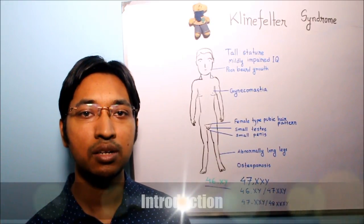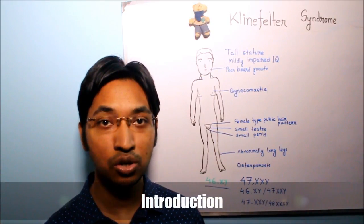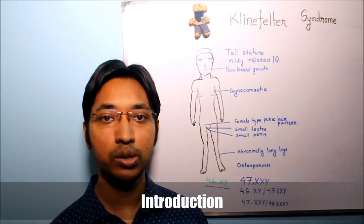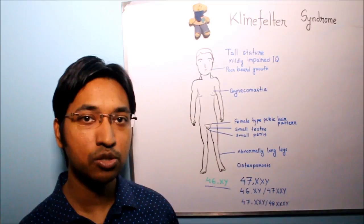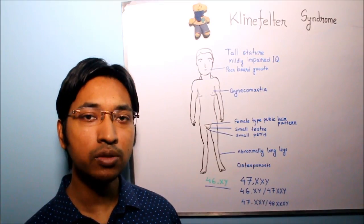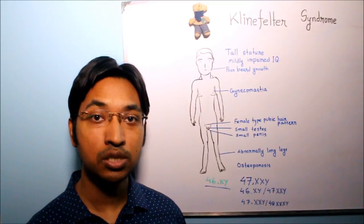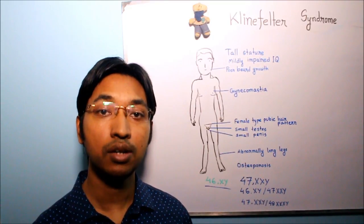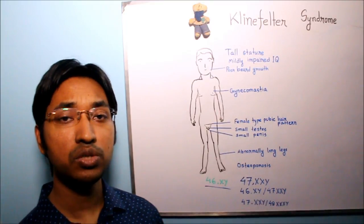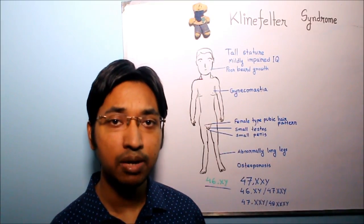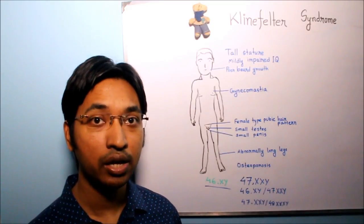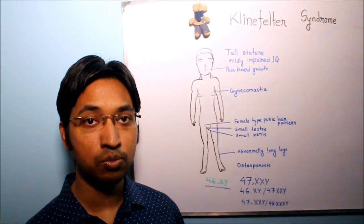What do we mean by Klinefelter syndrome? It is a genetic disorder and it is one of the most common causes of hypogonadism in male individuals. It occurs due to presence of two or more X chromosomes and one or more Y chromosomes. Recall that a normal male individual has 46 chromosomes with one X chromosome and one Y chromosome, and the karyotype of a normal male is written as 46XY. But in Klinefelter syndrome there is presence of two or more X chromosomes and one or more Y chromosomes.